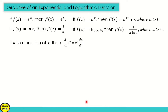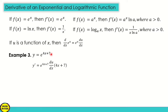If u is a function of x, then d over dx of e raised to u is equal to e raised to u times the derivative du over dx. For example, y is equal to e raised to 4x plus 7. Here u is 4x plus 7. Copy the given and multiply by the derivative of u. The derivative of 4x plus 7 is 4, so the answer is 4 times e raised to 4x plus 7.